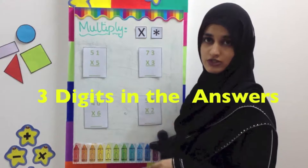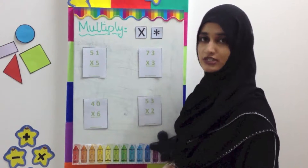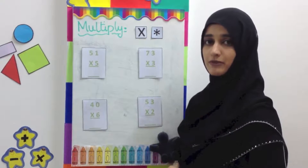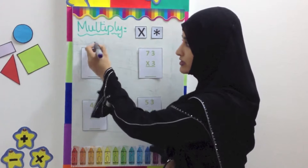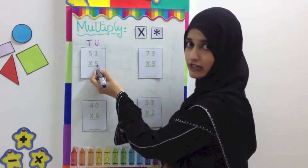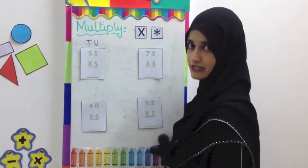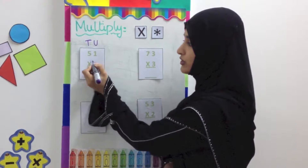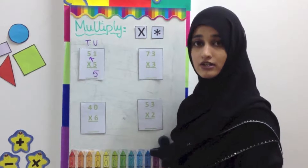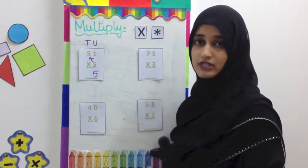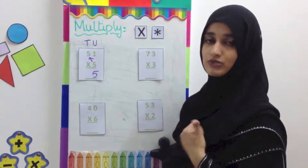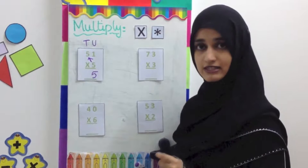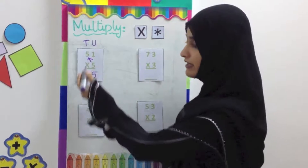When we solve these questions, the answers are going to have 3 digits in them. The question is 51 multiplied by 5. We are going to first multiply 5 with the 1 which is in the units place, and then we are going to multiply 5 with the 5 which is in the tens place. 5 ones are 5 — write that down in the units place. Now 5 fives are — if you know your times tables, this is going to be easy. Otherwise you will have to count in 5s: 5, 10, 15, 20, 25. The best thing is to learn your times tables. 5 fives are 25.